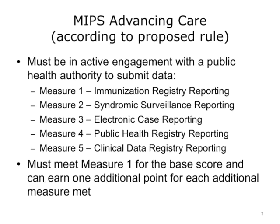According to the proposed rule for MIPS Advancing Care, the eligible clinician must be in active engagement with a public health authority to submit data for the following: Measure 1, Immunization Registry Reporting; Measure 2, Syndromic Surveillance Reporting; Measure 3, Electronic Case Reporting; Measure 4, Public Health Registry Reporting; and Measure 5, Clinical Data Registry Reporting. They must meet Measure 1 for the base score and then can earn one additional point for each additional measure met.